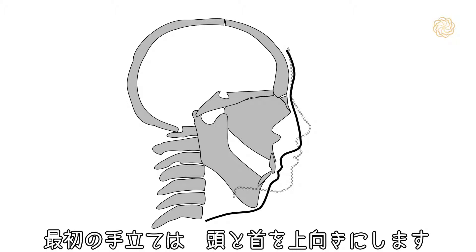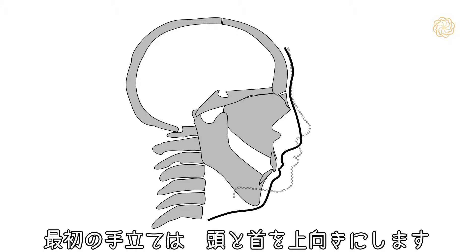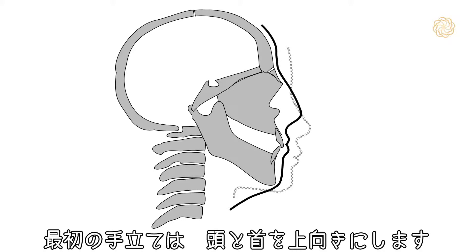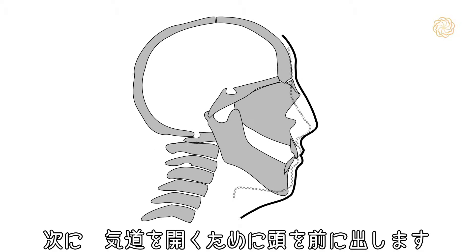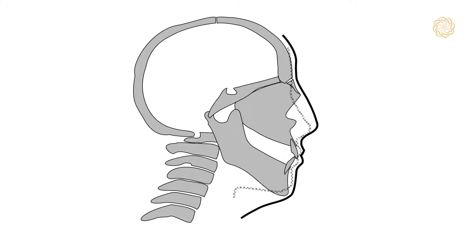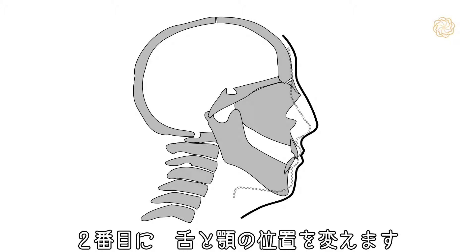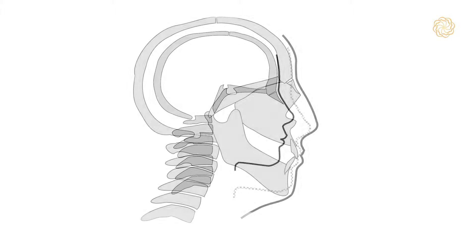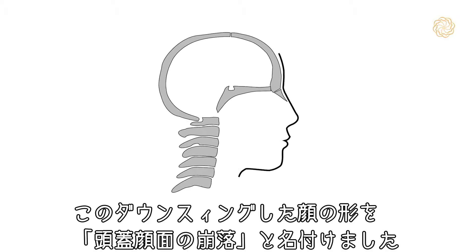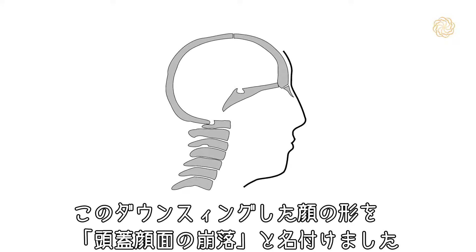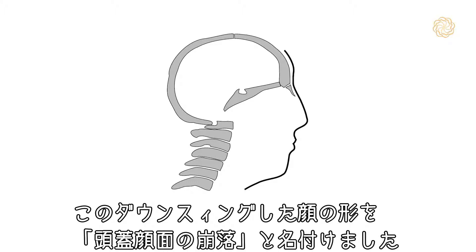The first compensation is moving the head and neck — usually extending the head to open the airway — and the second is changes in the position of the tongue and the jaw. We've termed this downswing in facial form as craniofacial dystrophy.